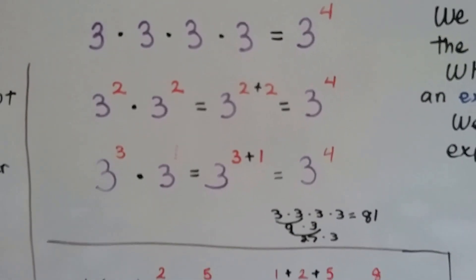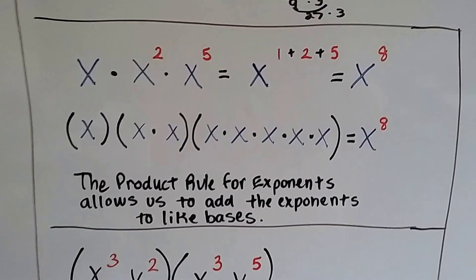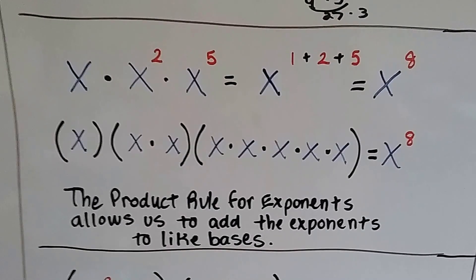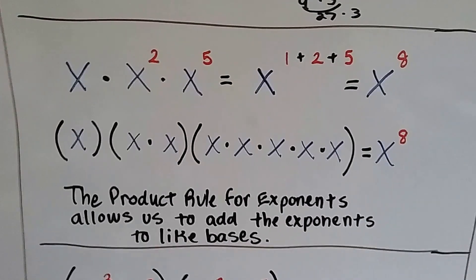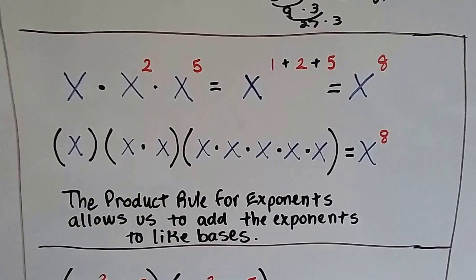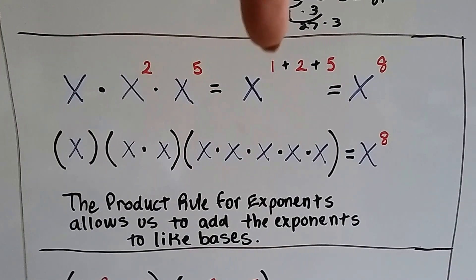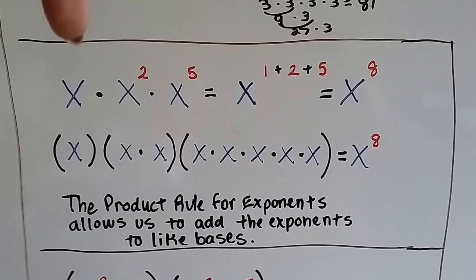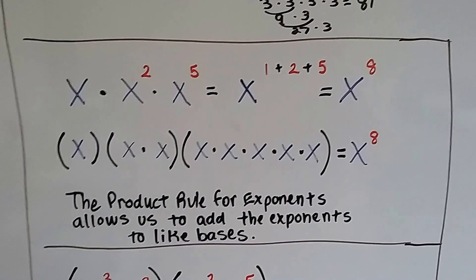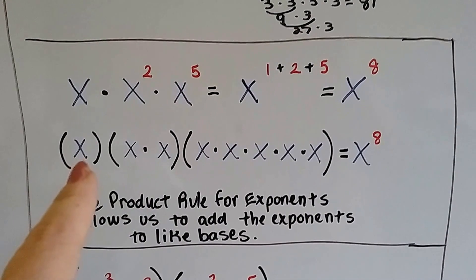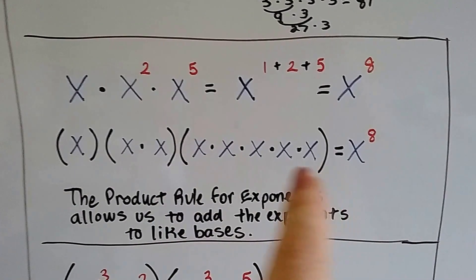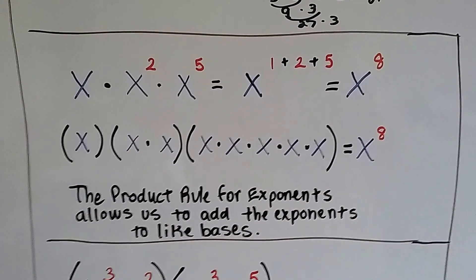This one can be answered, but with x we don't know what number x represents. We can still add the exponents together. We've got x times x to the second power times x to the fifth power — with the invisible 1 on the first x. So it's 1 plus 2 plus 5, and we get x to the eighth power. That's the same as 1 x, plus 2 x's, plus 5 x's. We add all the x's up because all these bases are the same.